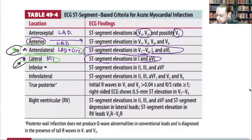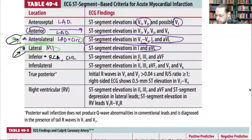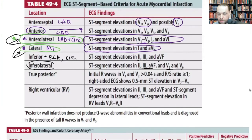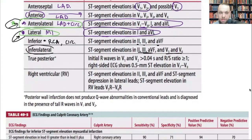The inferior wall MI involves leads II, III, and aVF — typically the right coronary artery, but the circumflex may also be involved depending on the patient's anatomy. The inferior-lateral MI combines leads II, III, aVF plus V5 and V6, which involves the circumflex and the lateral wall. The circumflex feeds the lateral wall and in some patients also feeds the inferior wall.